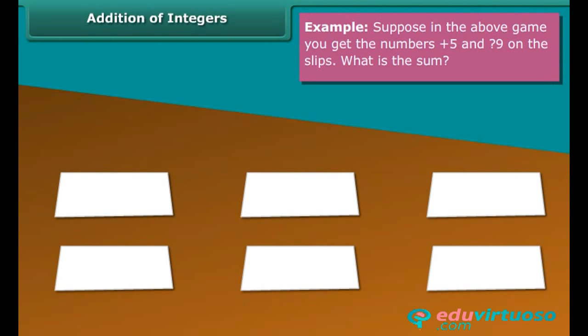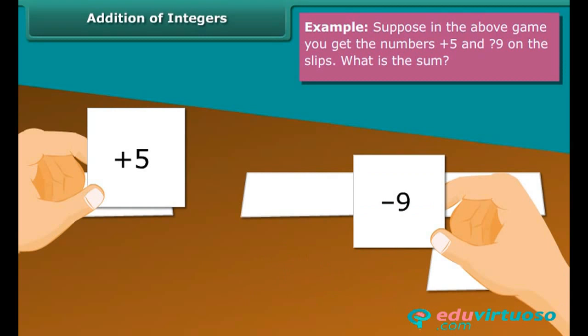Example: Suppose in the above game, you get the numbers plus 5 and minus 9 on the slips. What is the sum? Plus 5 plus minus 9, which is equal to minus 4.